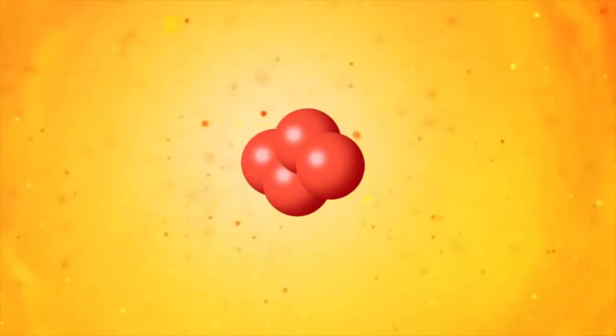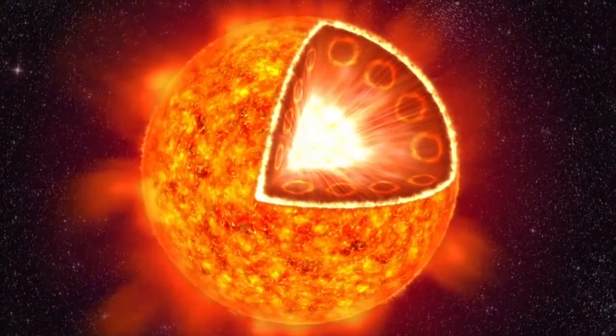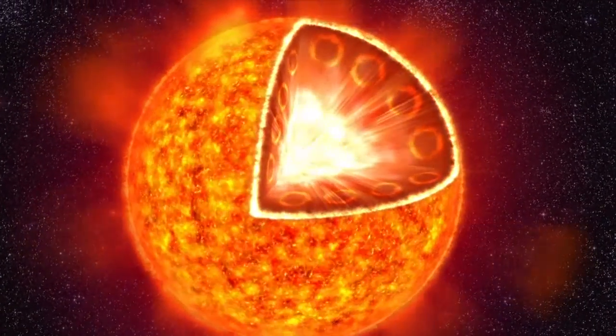The light radiates outward from the core of the Sun. In the outer layers, the heat moves to the surface in huge eddies called convection cells.